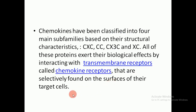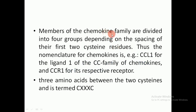Chemokines have been classified into four main subfamilies based on their structural characteristics: CXC, CC, CX3C, and XC. All of these proteins exert their biological effects by interacting with transmembrane receptors called chemokine receptors, selectively found on the surface of their target cells. Chemokines are classified according to their chemical structure, specifically the spacing of their first two cysteine residues.